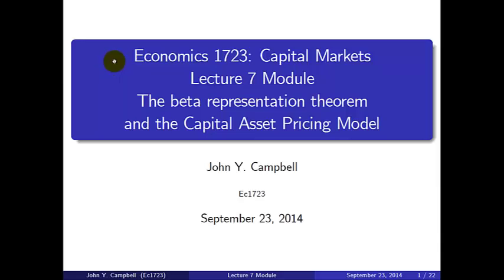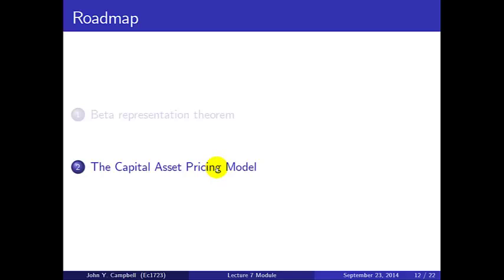Welcome to Economics 1723 Capital Markets, the second part of the online module for lecture 7, which covers the capital asset pricing model. The CAPM is an equilibrium argument that builds on the mutual fund theorem that we've already developed and then uses the beta representation theorem.